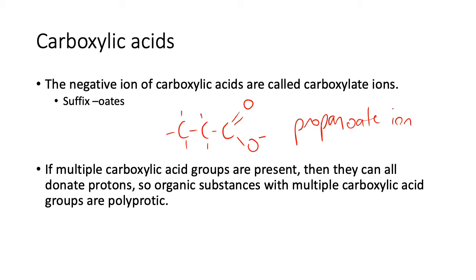If multiple carboxylic acid groups are present, they can all donate protons, so organic substances with multiple carboxylic acids are polyprotic. The most common one you'll deal with is oxalic acid, also known as ethanedioic acid, where it's going to donate that proton and that proton.